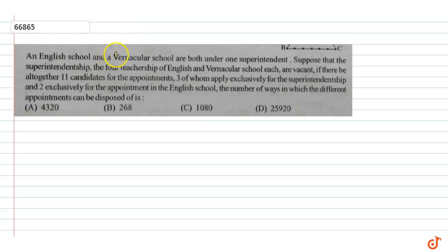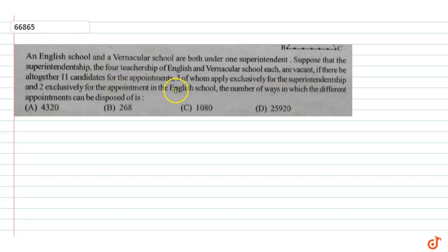The English school and the vernacular school are both under one superintendent. Suppose that the superintendentship and the four teacherships of English and vernacular school each are vacant. If there are altogether 11 candidates for the appointments, three of whom apply exclusively for the superintendentship, two exclusively for the appointment in the English school — find the number of ways in which the different appointments can be disposed.